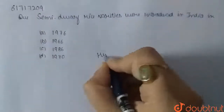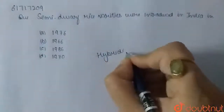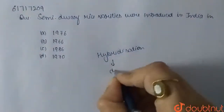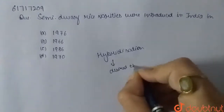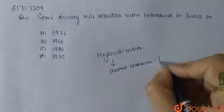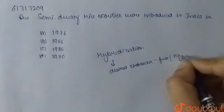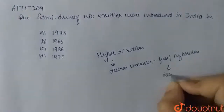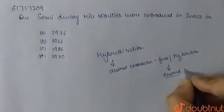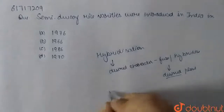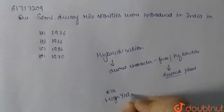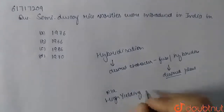Hybridization: we take two plants which have the desired characters, and we fuse or hybridize them. We use them to grow or reproduce, and the resulting varieties are known as high yielding varieties.